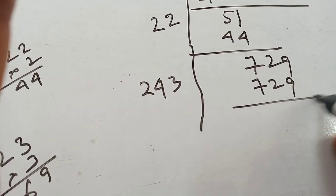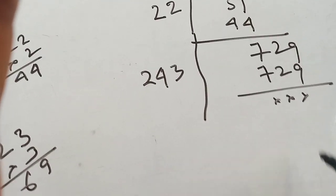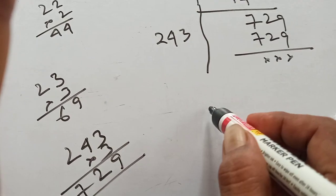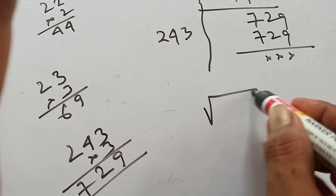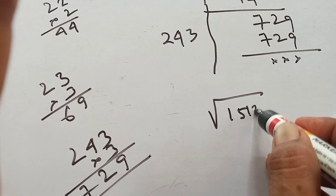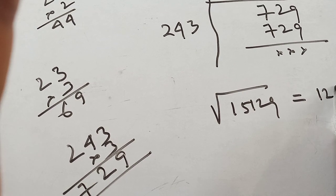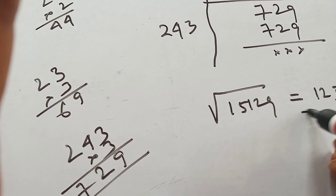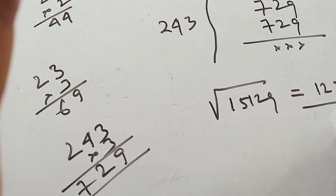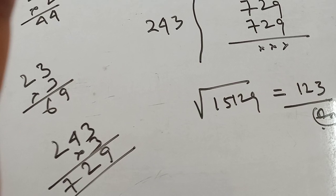729 minus 729 is zero. So the square root of 15129 is equal to 123. This is the answer.